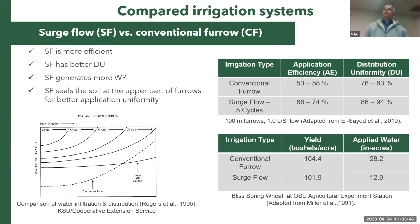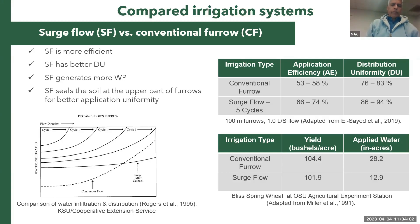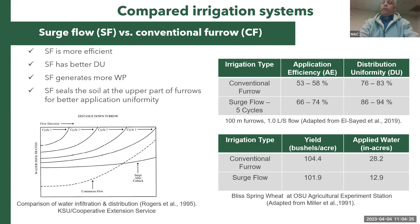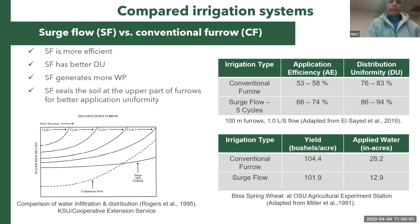Comparing surge flow to conventional irrigation, you can see that by applying water in cycles, you achieve a more uniform infiltration along the entire field from beginning to end. With conventional irrigation, more water infiltrates at the field's beginning and far less at the end. Studies show surge flow delivers better application efficiency, better distribution uniformity, and similar yield — while cutting water application by more than 50%.